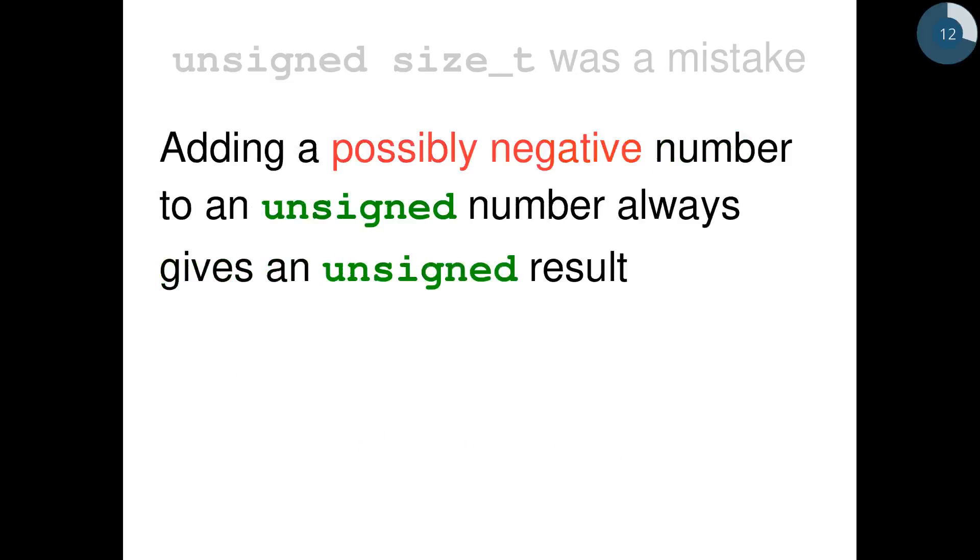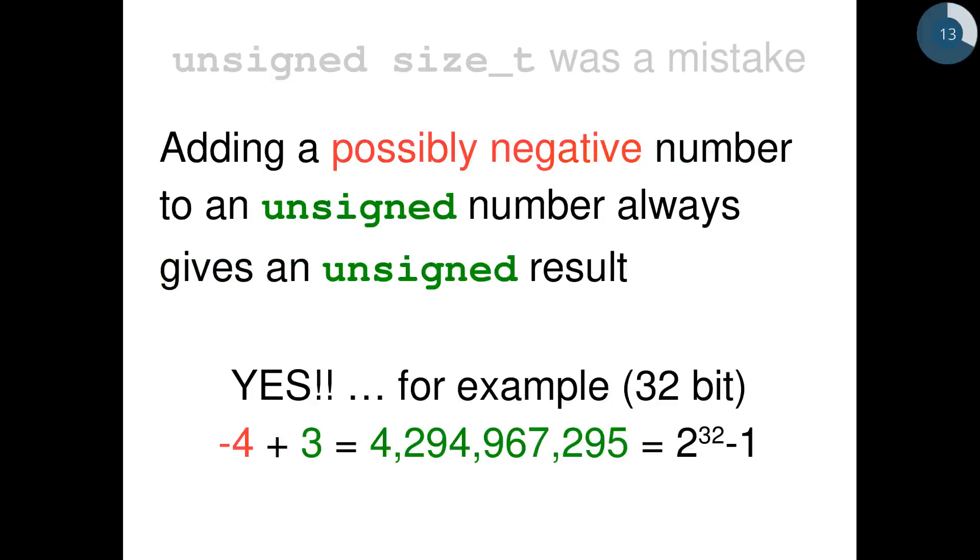Similarly, if I say that adding a possibly negative number to an unsigned number always gives an unsigned result, this is also true. And in C++, minus 4 plus 3, where 3 is an unsigned number, gives back the same 4 billion something result.